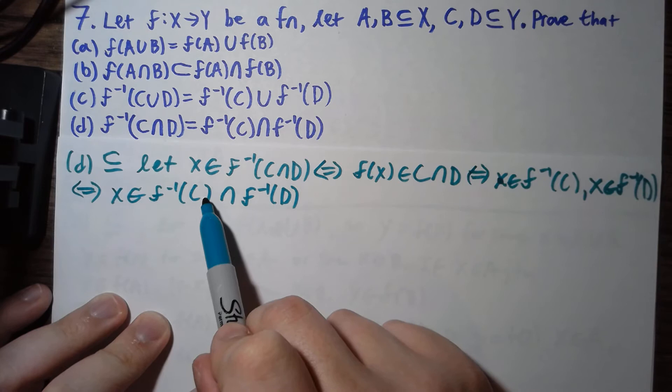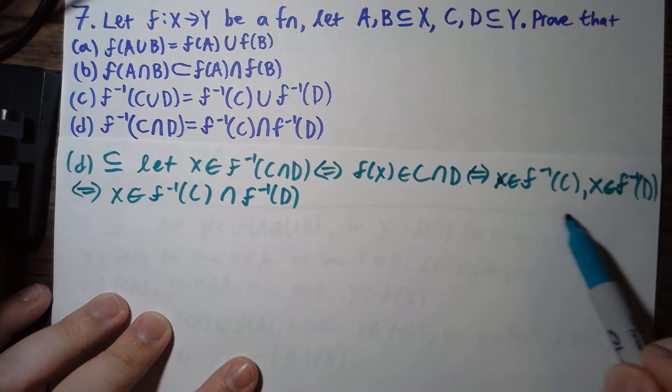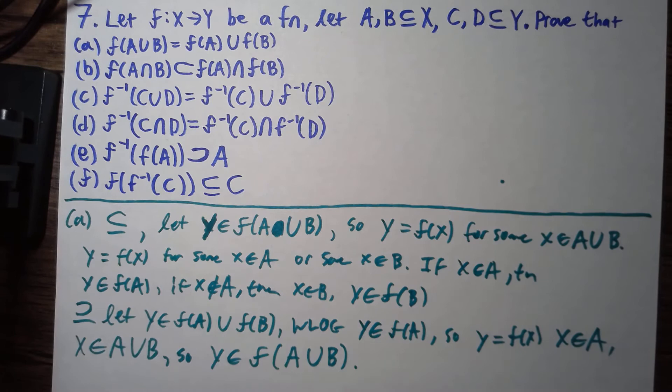If we have an element of the intersection, then it's in both f inverse of C and f inverse of D. But that's true if and only if the image of x is in C and it's in D, which is if and only if x is in the pre-image of the intersection. So we have both inclusions.